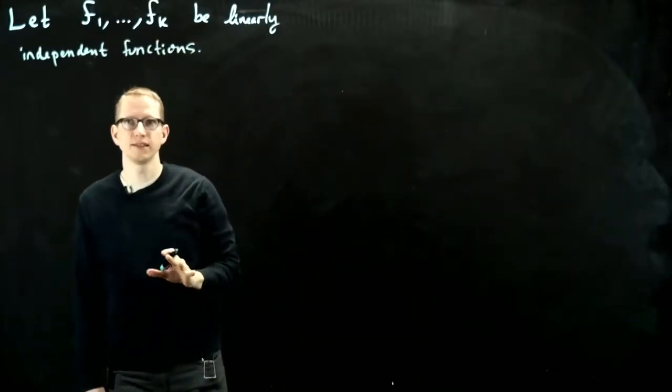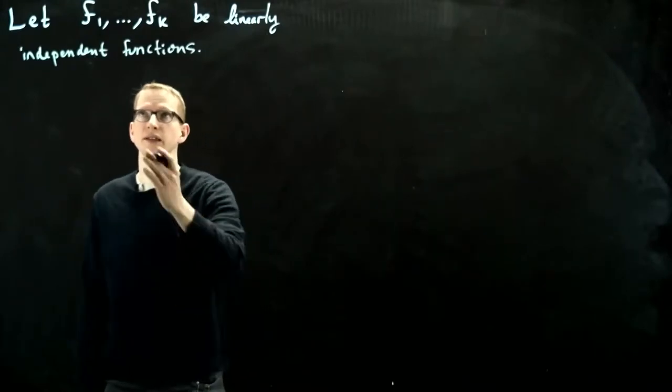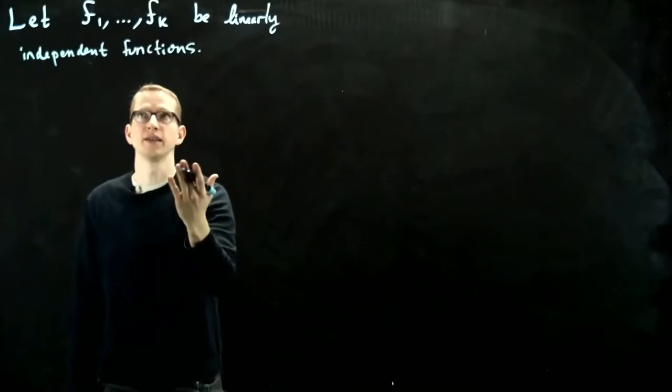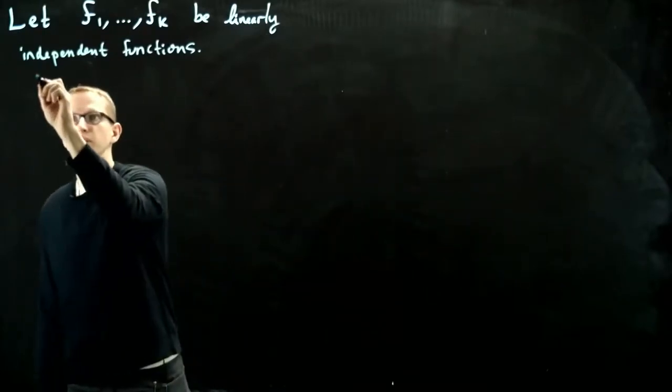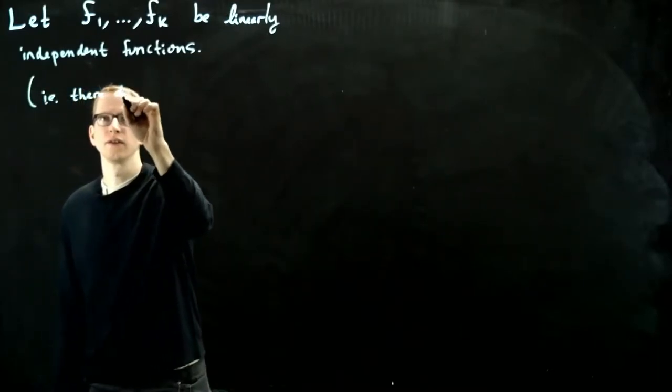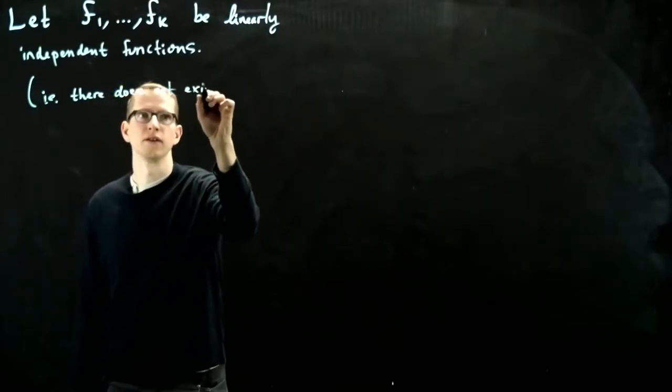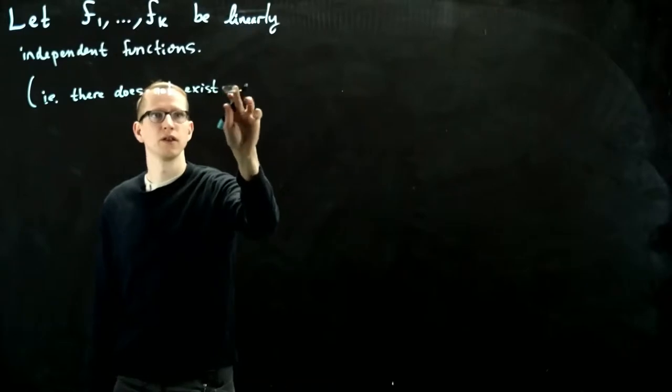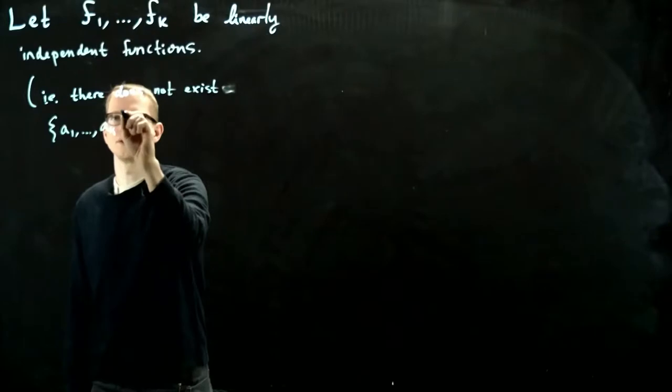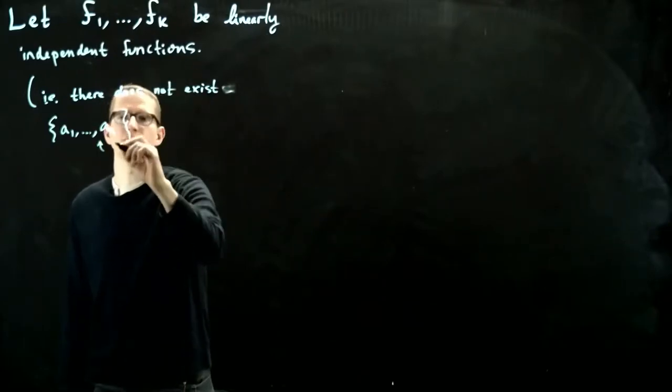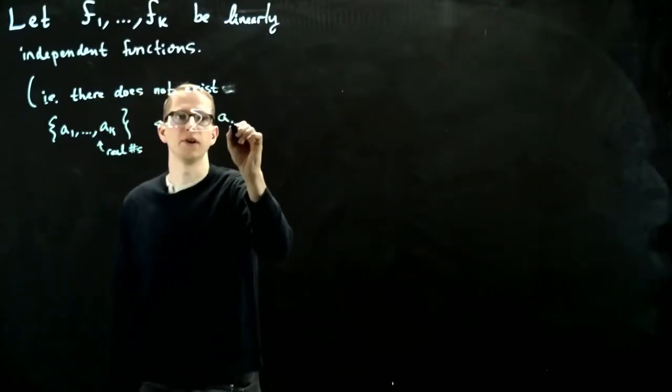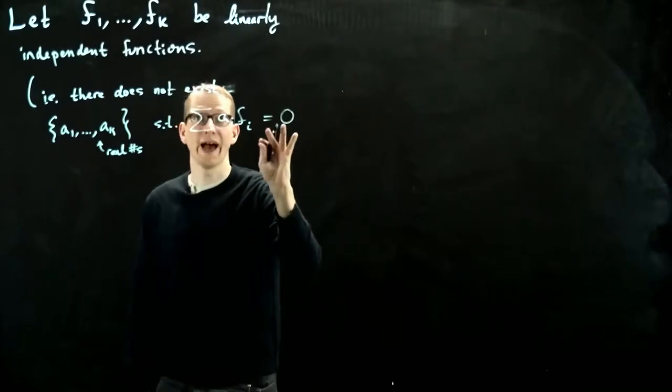What I mean by this is it's the same definition of linear independence of vectors, namely that there does not exist a set of numbers a1 through ak such that the sum of ai*fi equals 0 as a function.